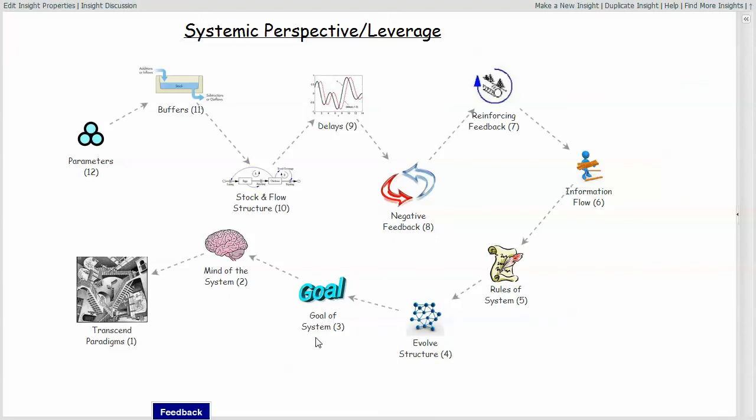And then the mindset of the system, which is essentially the underlying set of paradigms which the system operates based upon. The values and belief structures of the participants that are part of the system itself, which govern the way that the actions are taken. And then finally, the most difficult thing to effect, which has the greatest impact on the system, is the power to actually transcend the paradigms to begin with, to challenge the fundamental assumptions that are the basis for the whole operation of the system.